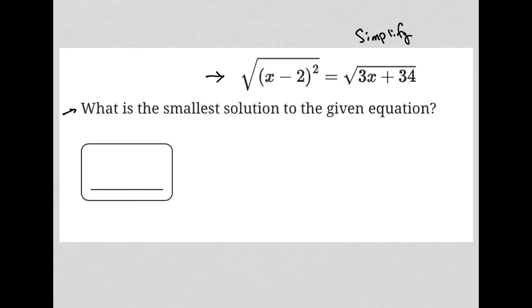All I'm going to do is start off with the equation provided and start to simplify it. I see that I have square roots on both sides of this equation, so I'm going to just square both sides. Squaring both sides leads me to just having x minus 2 squared here, and 3x plus 34.